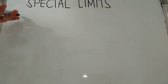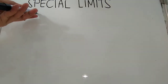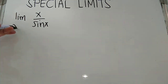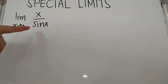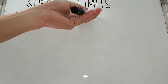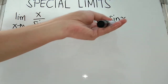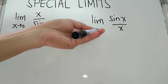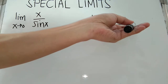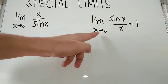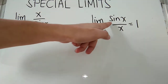For example, if we have the limit of x over sin x as x approaches 0, the given function is a trigonometric function sine. So we have to base on the special limit theorem stating that the limit of sin x over x, as x approaches 0, has a limit value of 1. This is our first special limit theorem, having a trigonometric function sine.